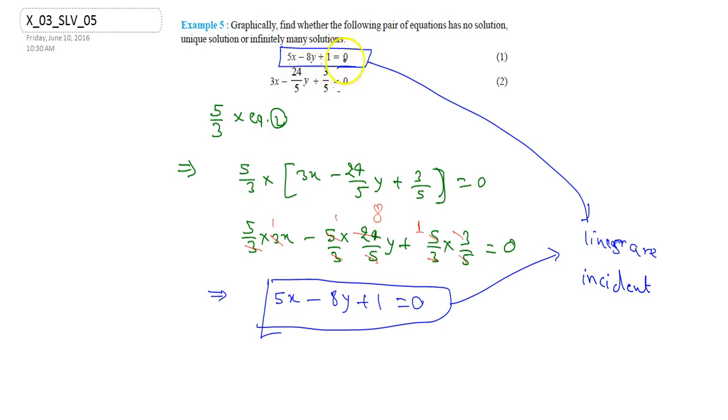So any point which lies on the line 5x minus 8y plus 1 equals to 0 will be its solution, or I can say the pair has infinitely many solutions.